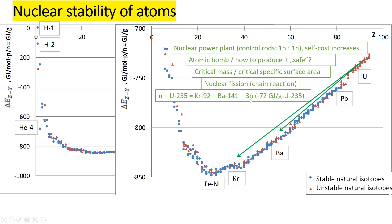This is done by positioning uranium rods in a large steel vessel full of water. Two neutrons come out into the water, the water is heated up by the neutrons, the water evaporates, steam is formed, it is directed onto a turbine, and the turbine produces electric energy — the final product of the nuclear power plant.